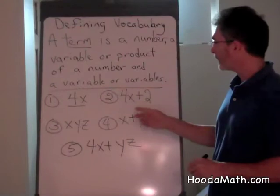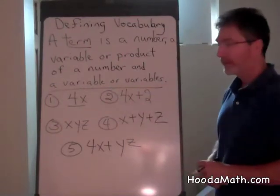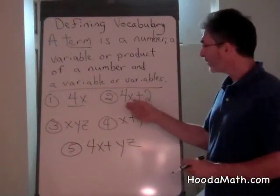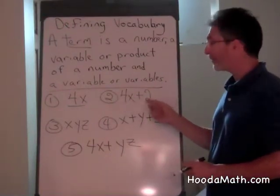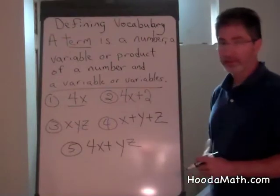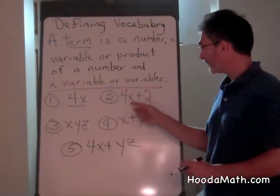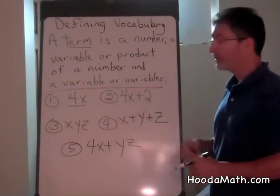How many terms do you think are here? There are two terms because when a term is separated by another term by addition, there are two separate terms: 4x and 2.